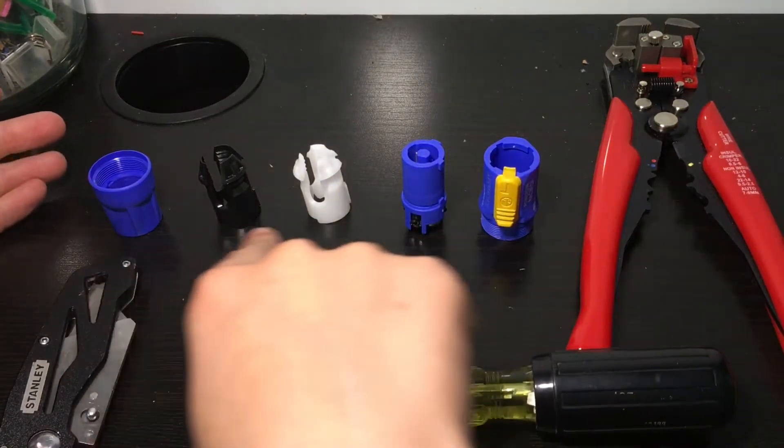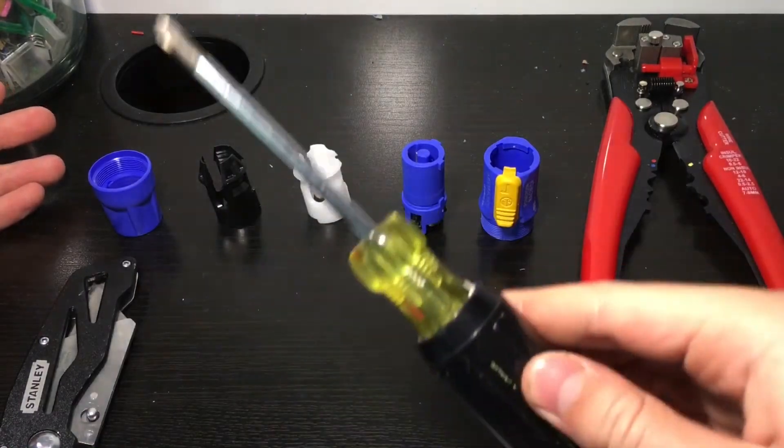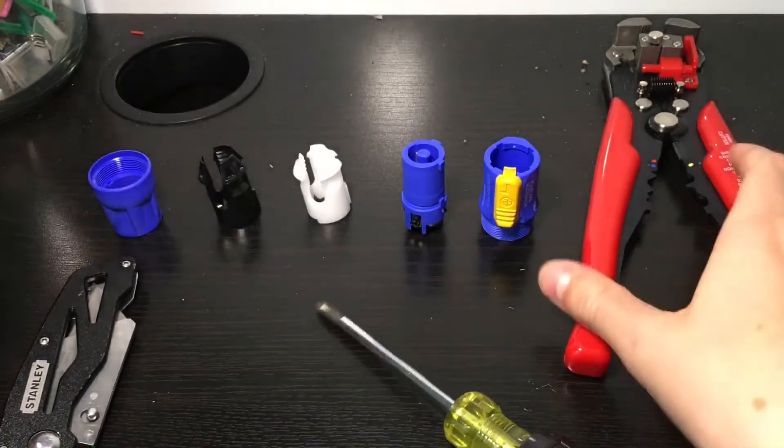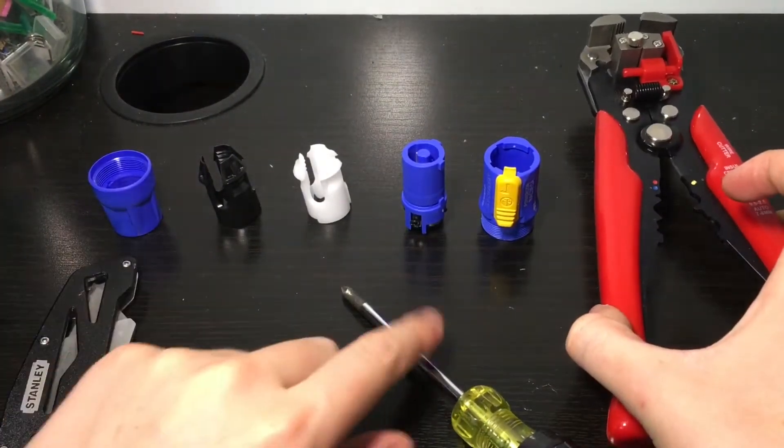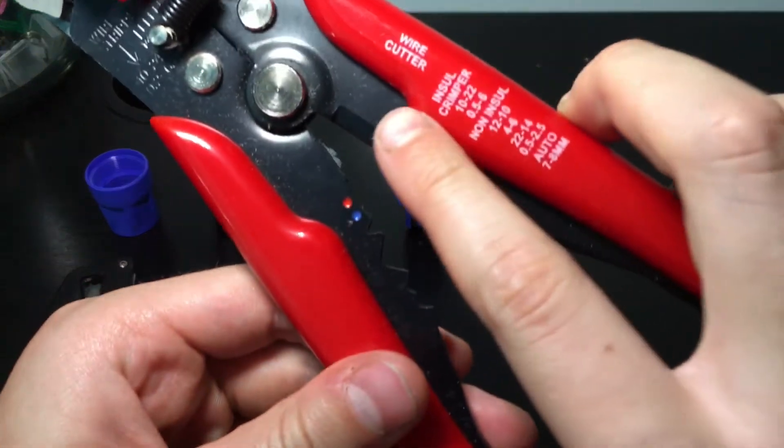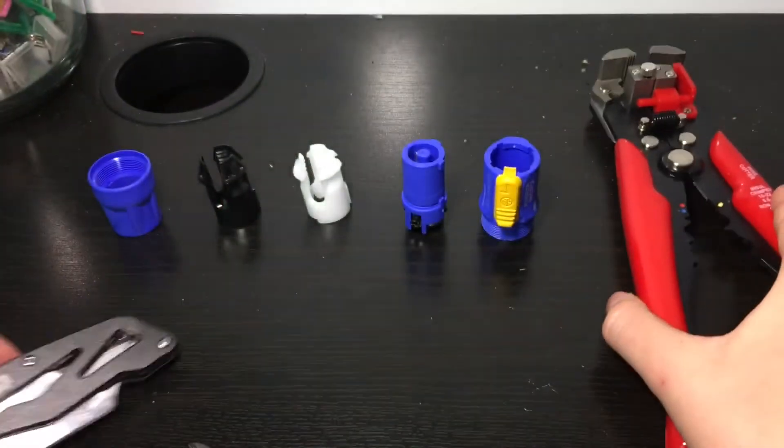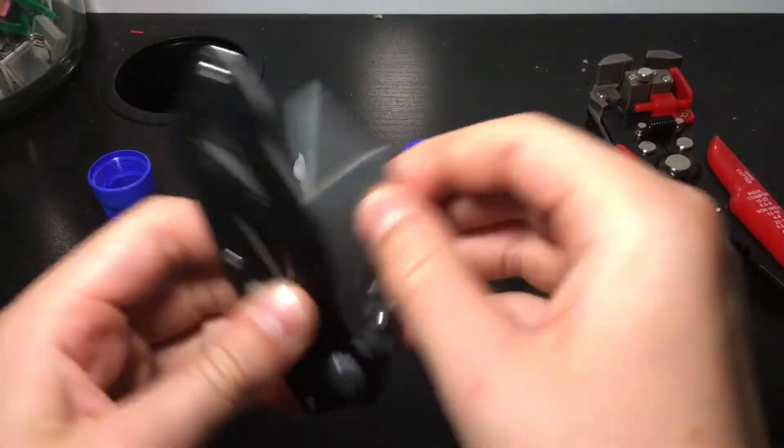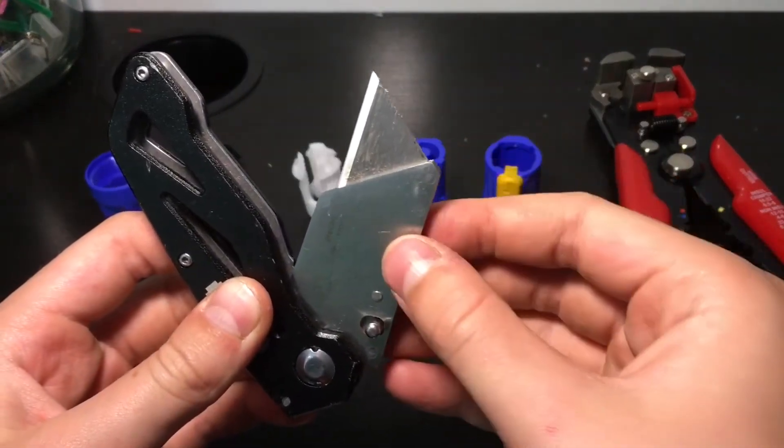You're going to need all the parts for your PowerCon jack, a screwdriver, wire strippers and it's helpful if it has a cutter in it, and a razor blade of some sort or scissors or something sharp.